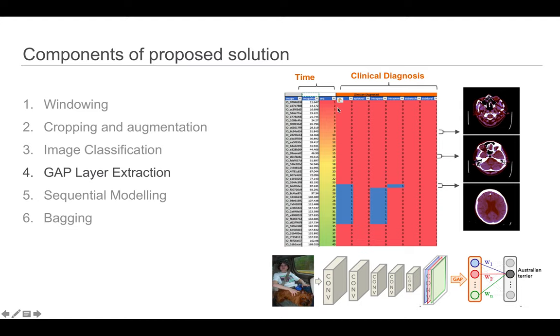We wanted to represent the images within a sequential model. For this, we used the GAP layer of the model, which is used prior to the activation and the prediction of a classification model. This is a representation from deep learning of the image, essentially an embedding layer.